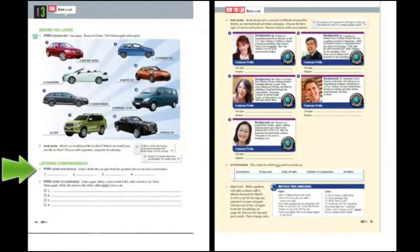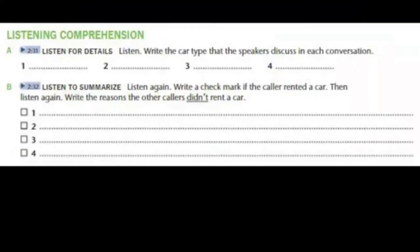Page 44. Listening comprehension. Exercise A: Listen for details. Write the car type that the speakers discuss in each conversation. Exercise B: Listen to summarize. Write a check mark if the caller rented a car. Write the reasons the other callers didn't rent a car.